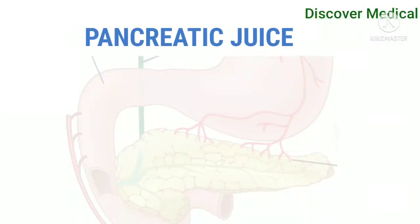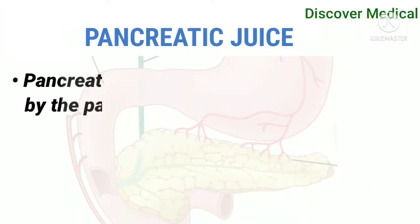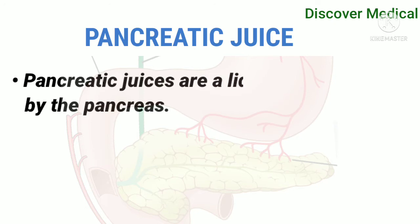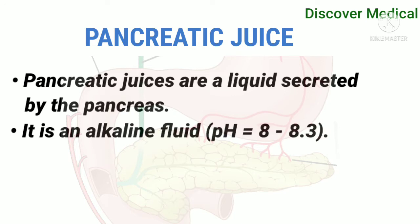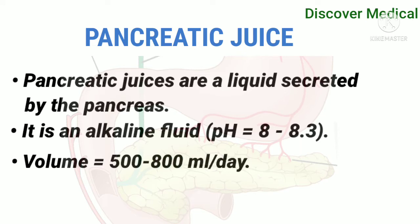Hey guys, welcome to our channel. Today we are going to see about pancreatic juice. Pancreatic juice is a liquid secreted by the pancreas. It is an alkaline fluid with a pH equal to 8 to 8.3, and a volume equal to 500 to 800 ml per day.